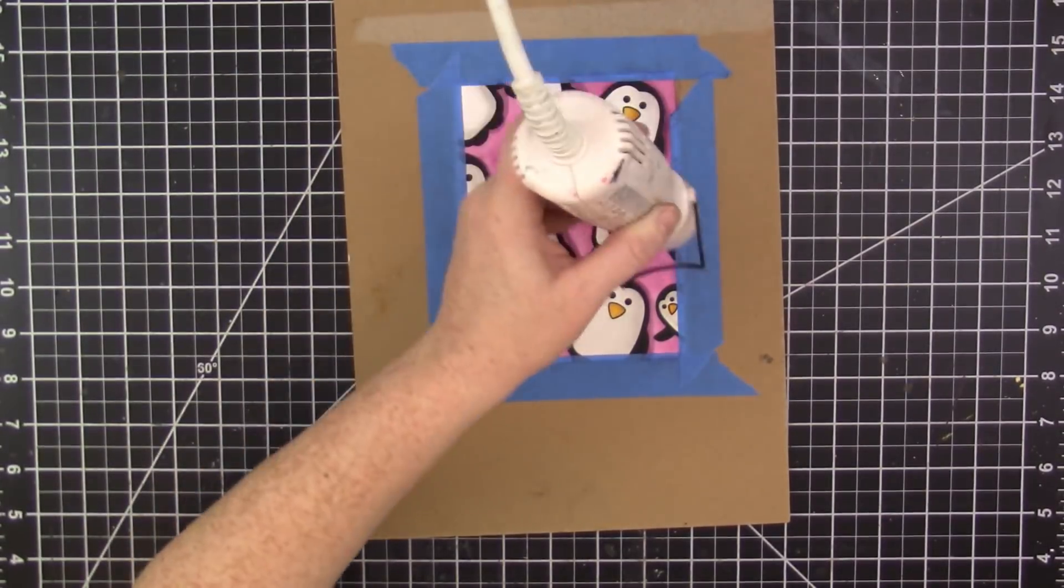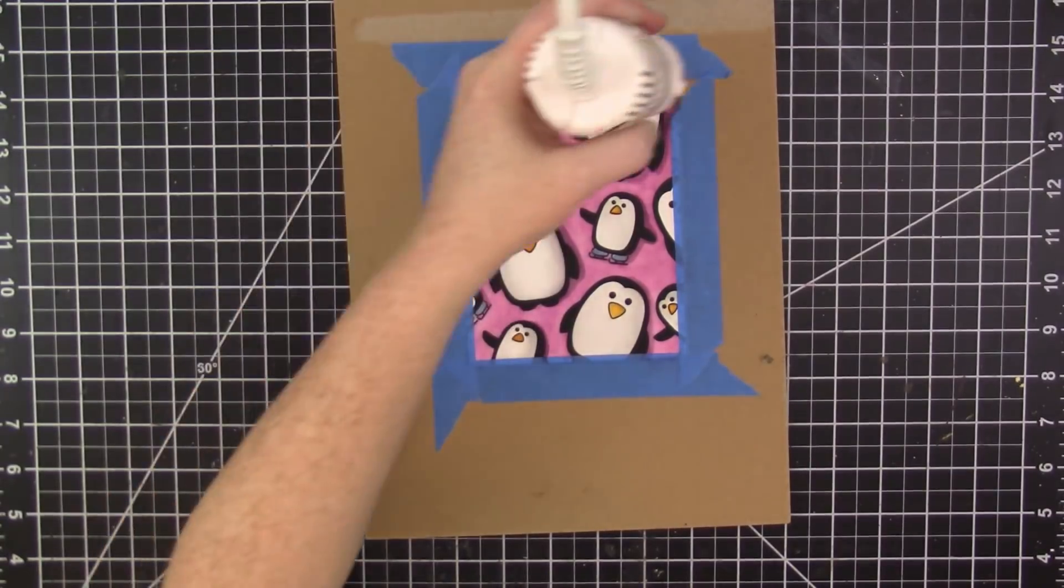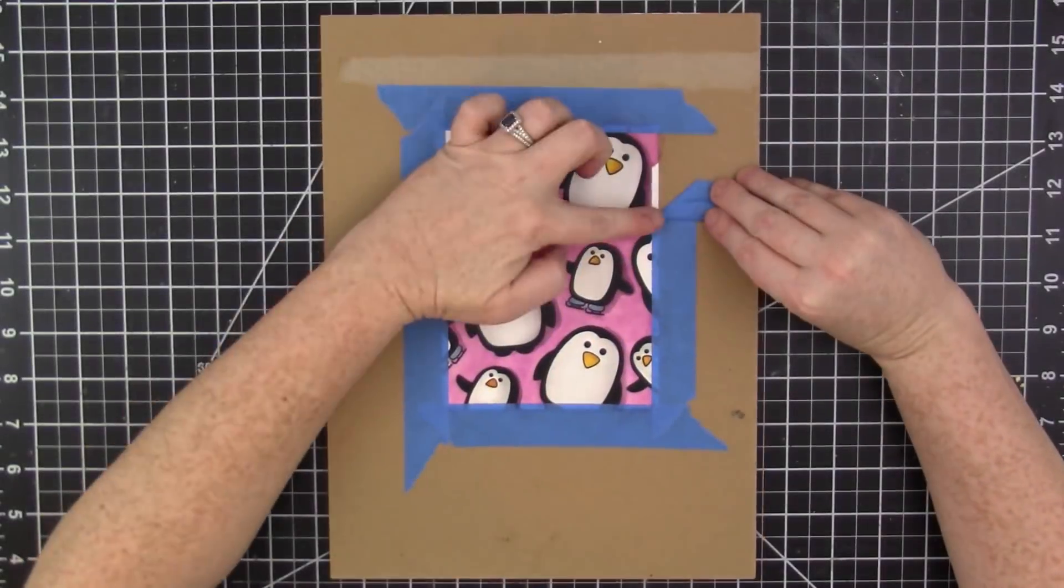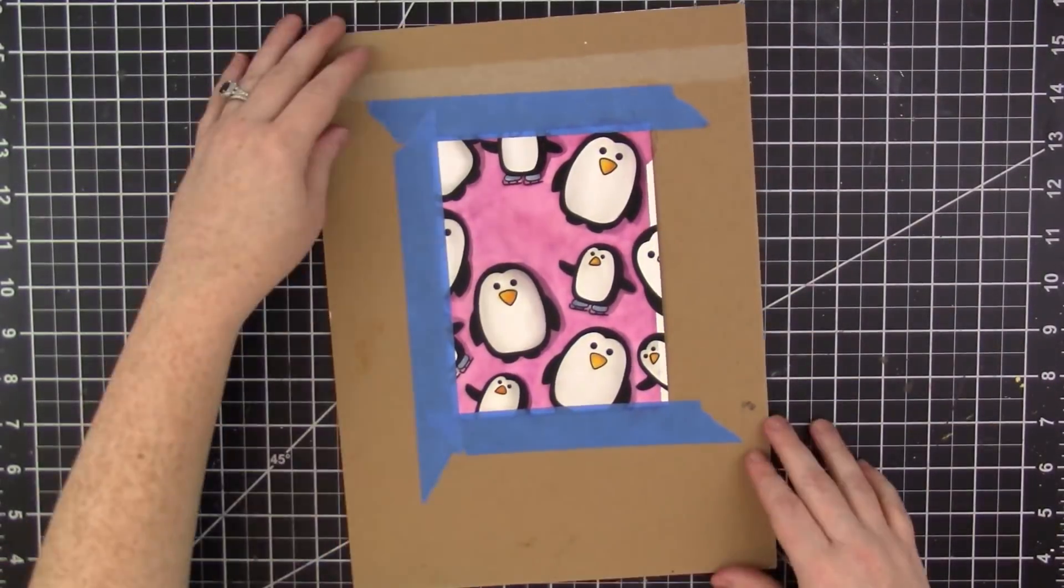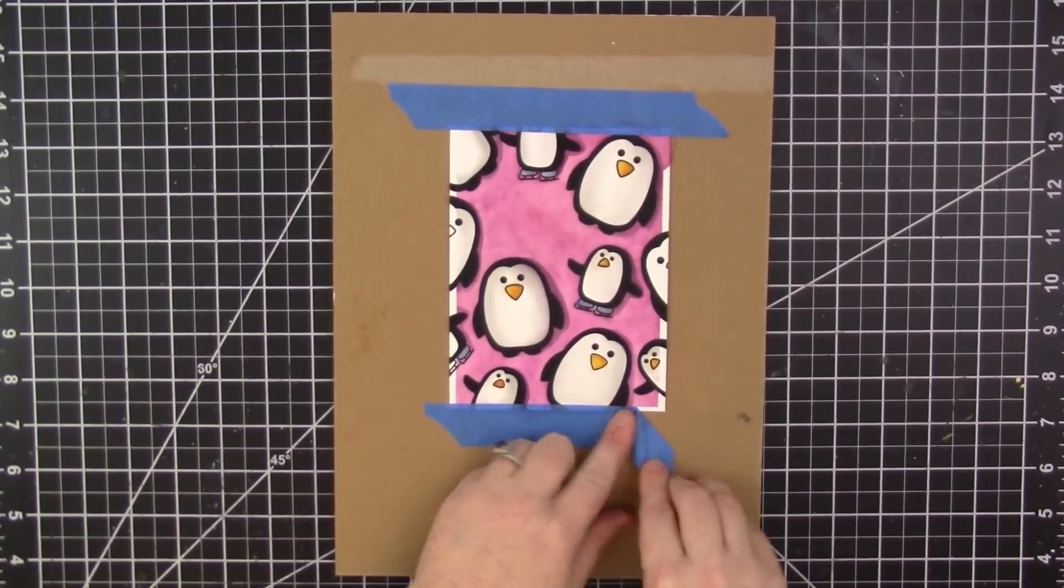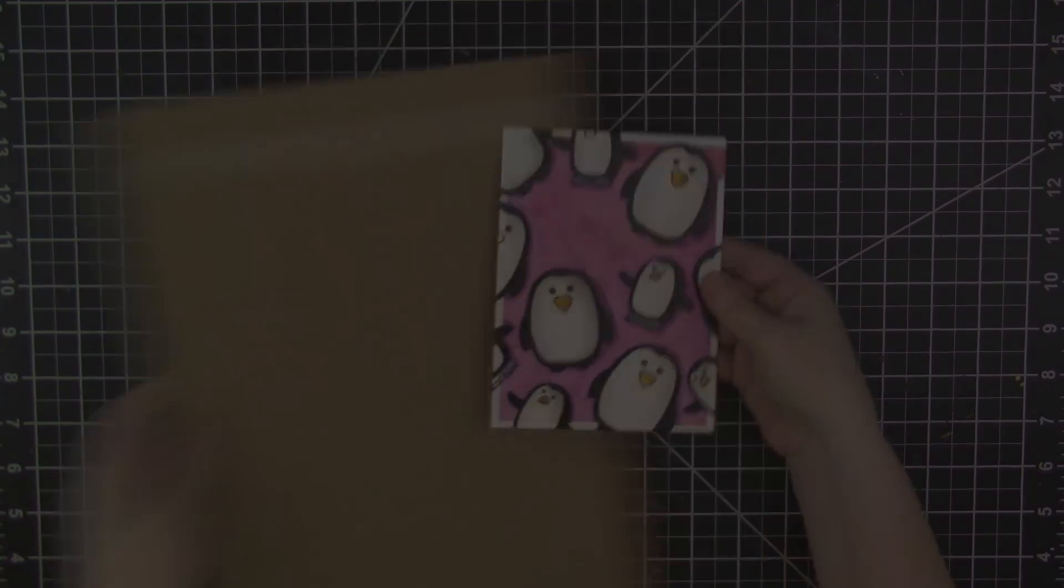So when I go to remove the painter's tape, I peel the tape back at a right angle to the paper. And this just helps the tape to remove more smoothly and make it less likely that the paper will tear. And there's going to be this white outline around the edges but I'll eventually trim down the panel so it'll be fine.